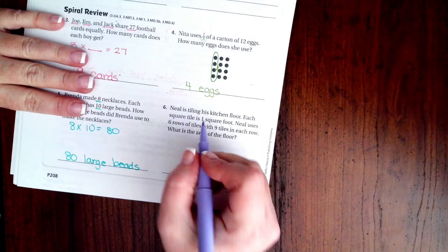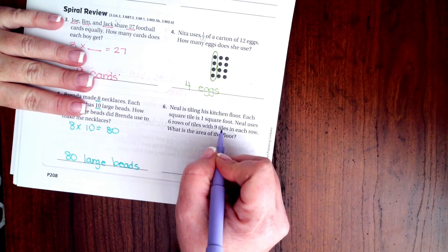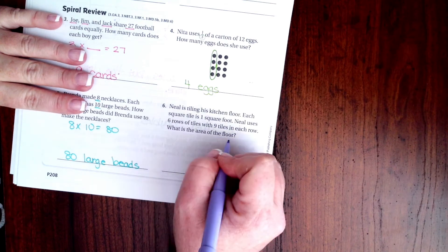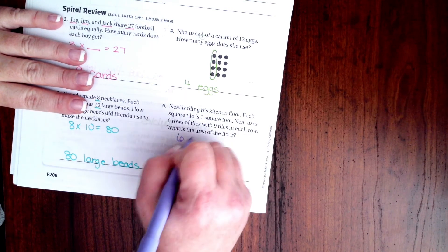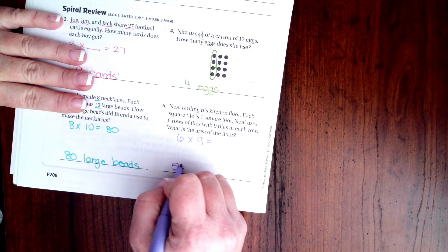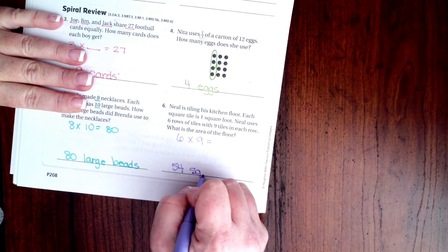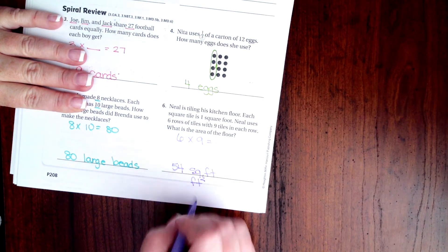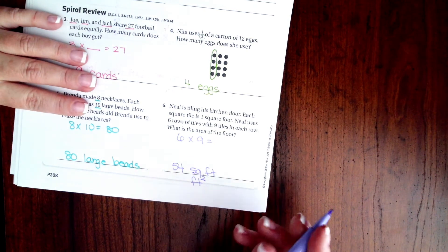Neil is tiling his kitchen floor. Each square is one square foot. Neil uses six rows of tiles with nine tiles in each row. We just have to do six times nine. Well that's fifty-four square feet. You can put feet squared or you can write out square feet, your choice.